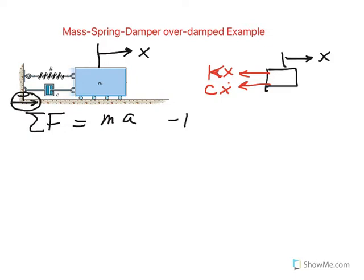So then we have minus kx minus cx dot equals mass times acceleration. Acceleration is x double dot.